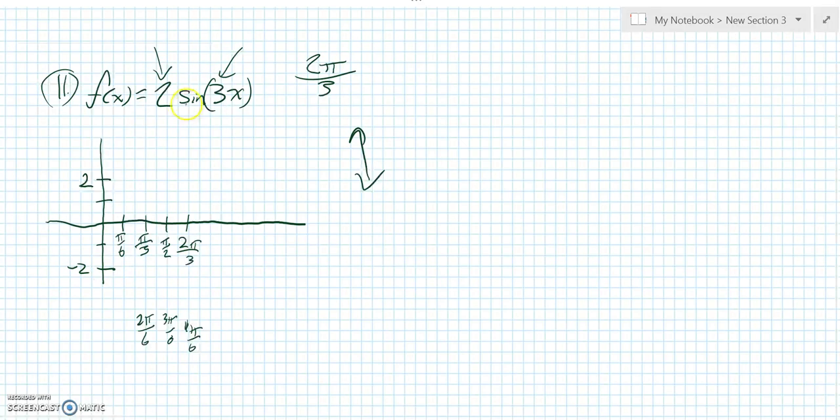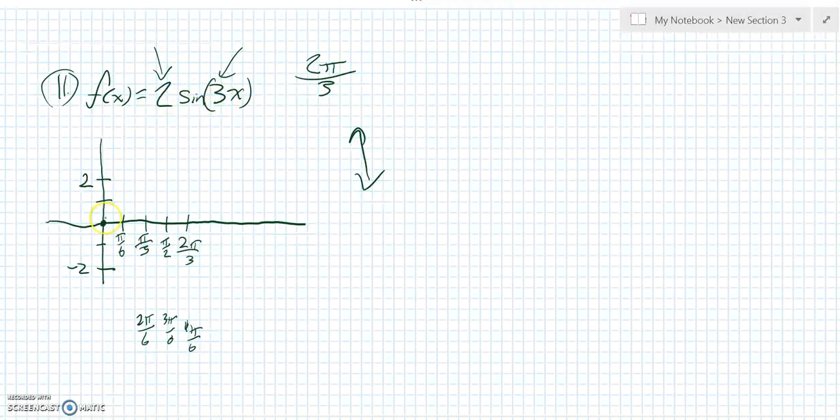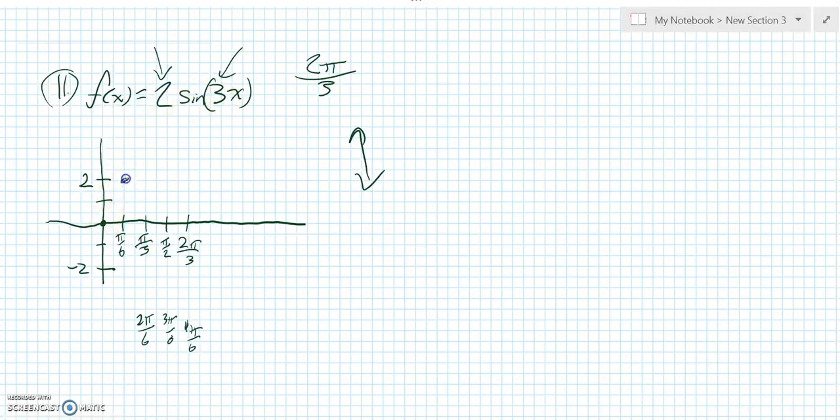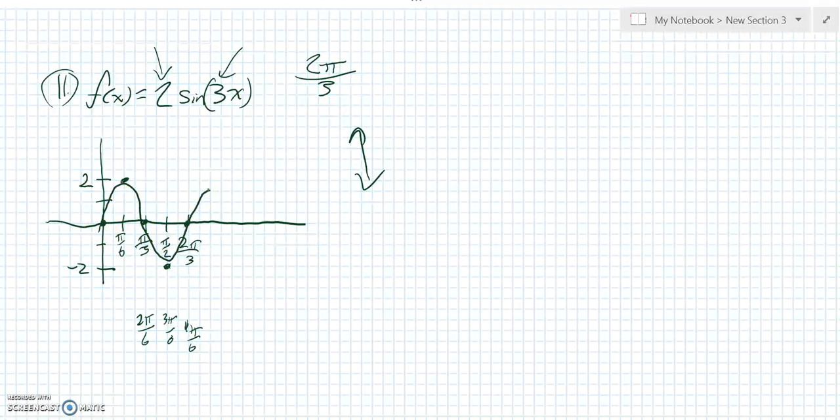Alright, the other thing I know about sine is sine starts at 0. When I have an angle of 0, I have a height of 0. So it'll start at 0, go up to the extreme, back through 0, back down through the extreme, back through 0. And I just need to sketch it. And there is my sketch.